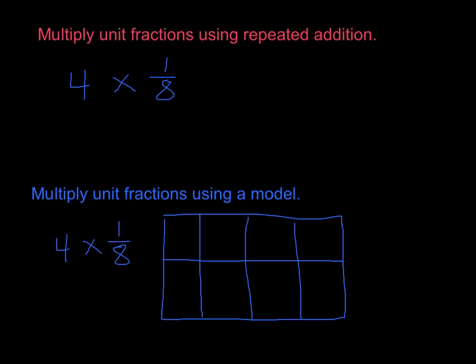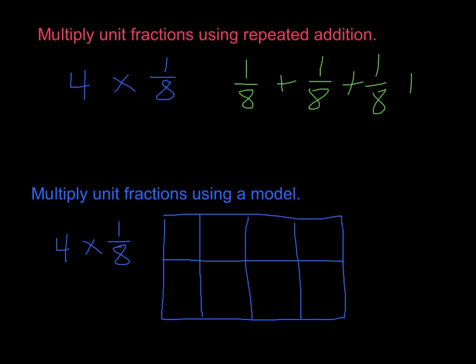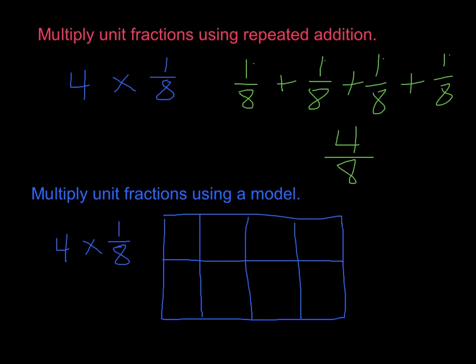We're going to start today by first multiplying a unit fraction using repeated addition. Multiplication is the same thing as repeated addition. So I'm going to multiply 1 eighth times 4 by taking 1 eighth plus 1 eighth plus 1 eighth plus 1 eighth. When you add fractions, your denominator stays the same, so the denominator stays as 8 and we only add the numerators: 1, 2, 3, 4. That gives us a numerator of 4 and a denominator of 8 — so we get 4 eighths.